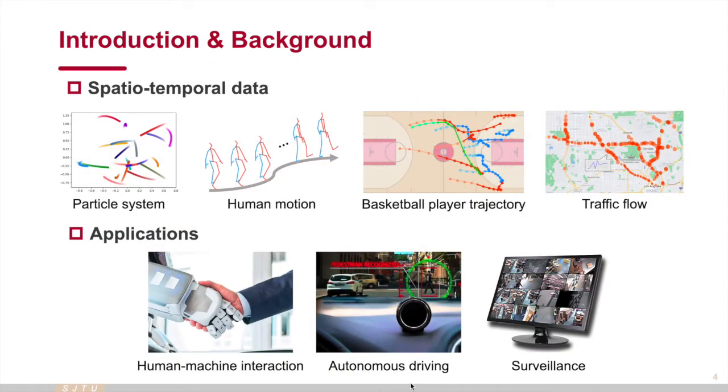Spatial Temporal Data exists widely in our life. In this data, multiple members have spatial distribution and time evolution, and there is spatial temporal dependencies between members. Here we show several typical examples, such as particle motion system, skeleton-based human action, and so on. Spatial Temporal Data also has many applications. It is important to study the modeling of this data due to the technical and practical values.